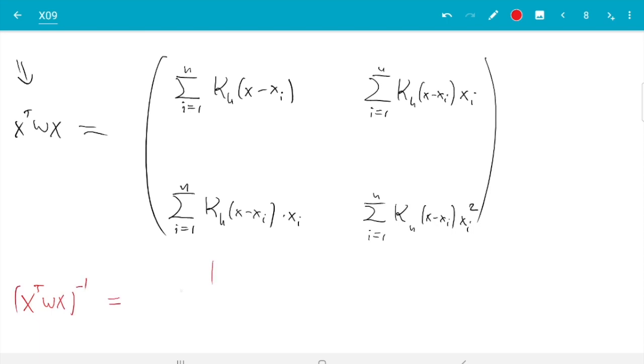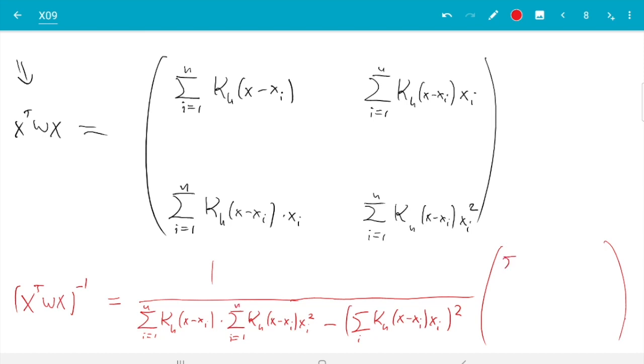I will squeeze this in here. It's 1 over A D. So sum i from 1 to n, kh x minus x i times sum i from 1 to n, kh x minus x i x i squared, minus this times this. But these two are the same. So it's minus this squared. And then here the matrix, the diagonal element swap. So it's sum kh x i squared and sum kh here. And then these two stay but get minuses in front. So it's minus sum kh x i and minus sum kh x i. So that's the result here.